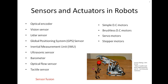Looking at a robotic arm example — it likely has a color or proximity sensor to detect objects, optical encoders to measure joint positions, and actuators like DC motors or servo motors to actuate the robotic arm and the gripper end effector.